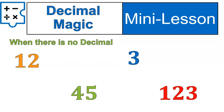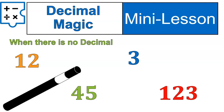First off, a little bit of decimal magic. When there is no decimal, you need to make a decimal. So this requires a little bit of magic. 3, 2, 1, poof. It goes right there at the end.